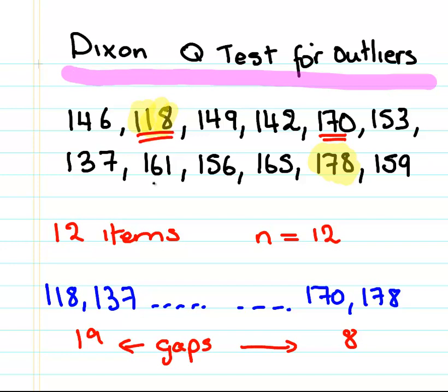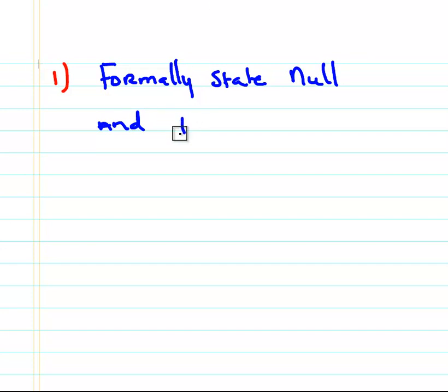So what we're going to do here is hypothesize that 118 is an outlier. First off, we have a four step process here. And the first step is formally state null hypothesis and alternative hypothesis. And essentially this is why you actually would learn this test, just because it's a nice easy way of getting the hang of these. So this is our first step, state the hypotheses.